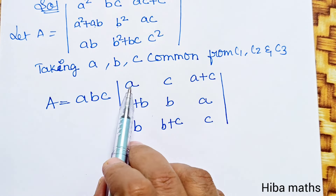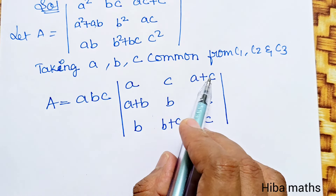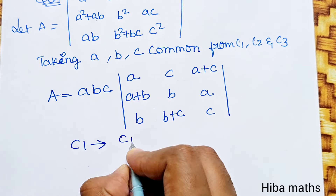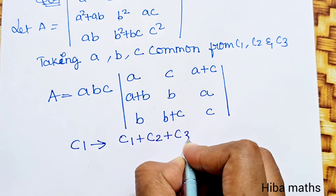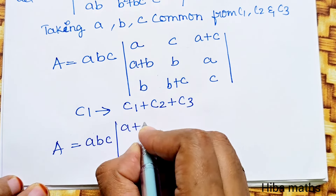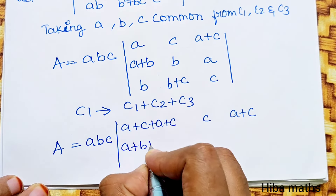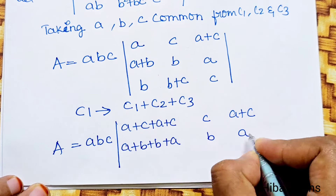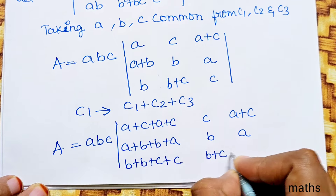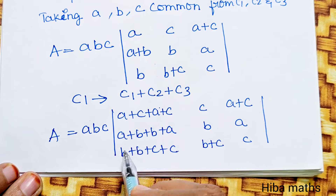Now we have A+C and A+C. What do we do? Add C2 and C3 to C1. C1 turns to C1 plus C2 plus C3. A is equal to A·B·C. A plus C, A plus C, C is equal to A plus C. B plus A·B here: B plus B plus C plus C, B plus C·C. Now we have 2A and 2C, 2A and 2B, 2B and 2C.